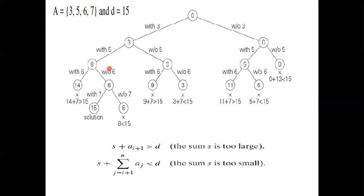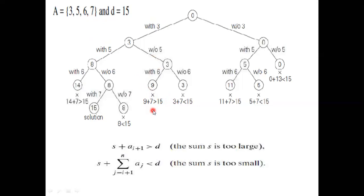Eight is smaller than 15, so there is a chance. The next number is 6. Eight plus 6 is 14 — that is width to 6. Once we return to width to 5, immediately write without 5 so you do not forget. Without 5 means we are not considering 5; the next number is 6, so width to 6: 6 plus 3 is 9. Nine plus 7 is greater than 15, so we put a cross mark there. Without 6 means 3 plus 7: that is less than 15 and there is no chance to reach 15 because 7 is the last number.